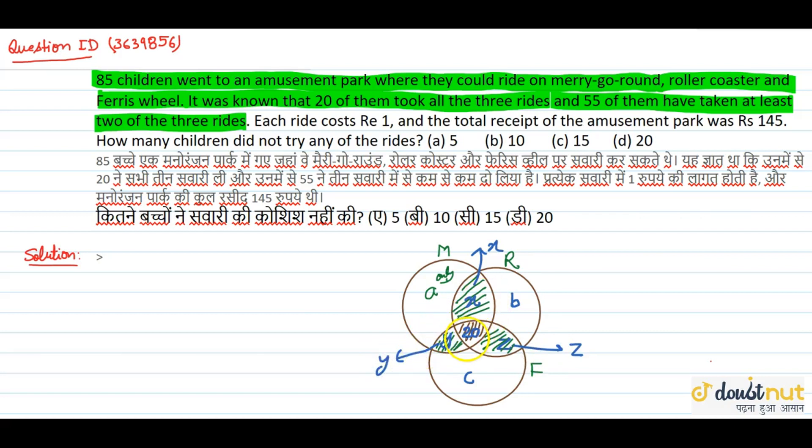What are y? These children have M riding and F riding. What are z? These children have R riding and F riding. This means x, y, z, they all have 2 rides.